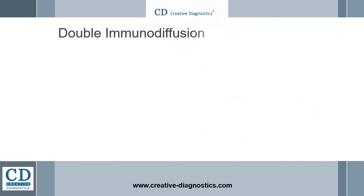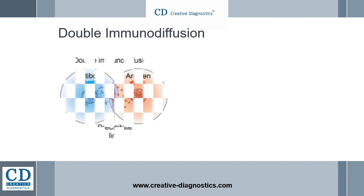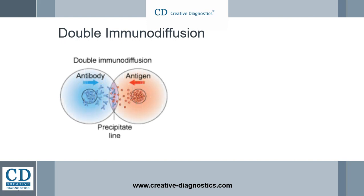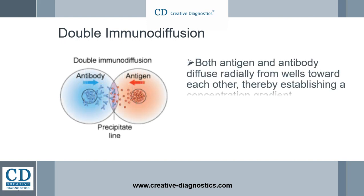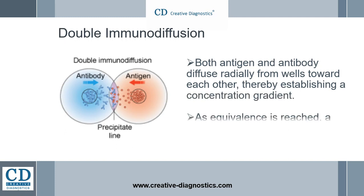In double immunodiffusion, both antigen and antibody diffuse radially from wells toward each other, thereby establishing a concentration gradient. As equivalence is reached, a visible line of precipitation forms.